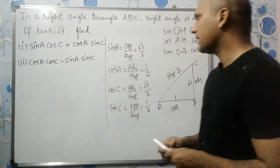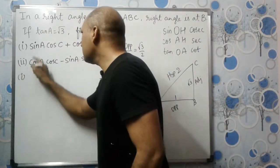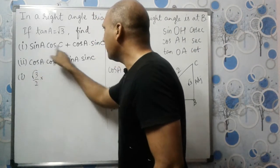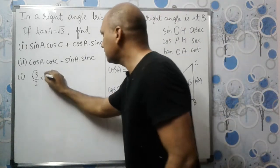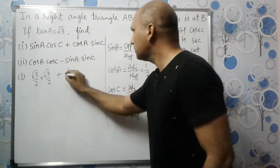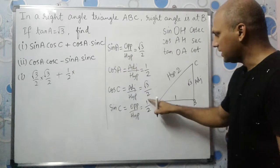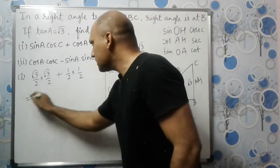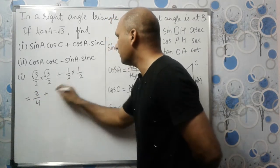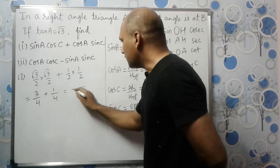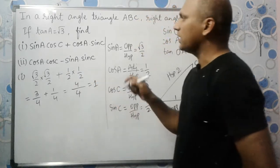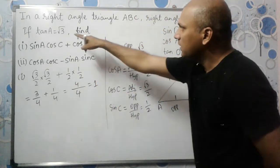Substituting into the first expression: sin A cos C plus cos A sin C equals (√3/2)(√3/2) plus (1/2)(1/2), which is 3/4 plus 1/4 equals 4/4 equals 1. This matches what we got using the angle values.